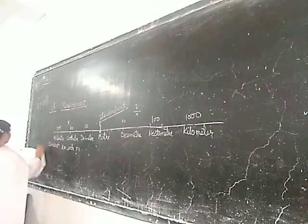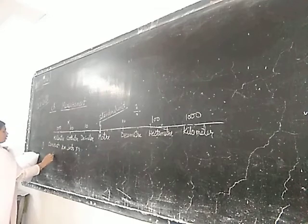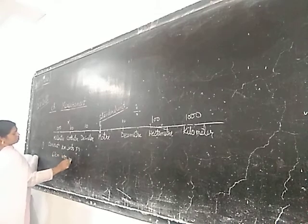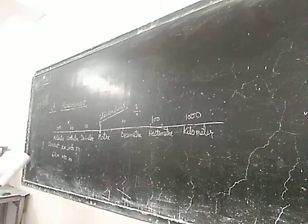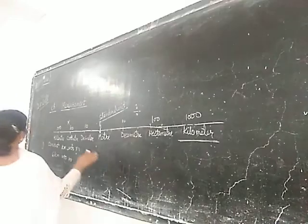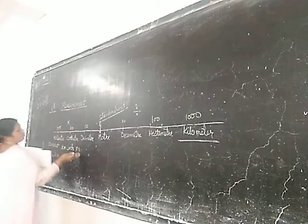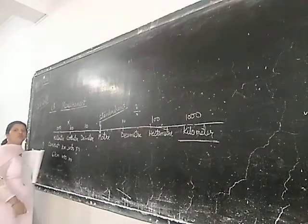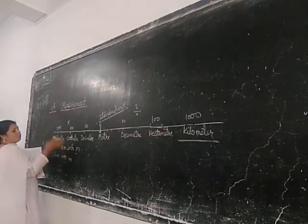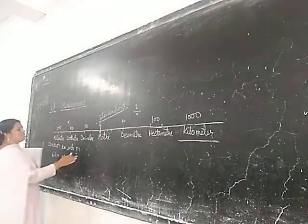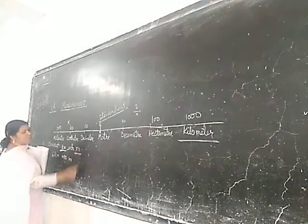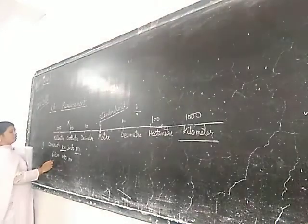Into meter. So, first thing, if you have 7, 6 kilometer into meter, so kilometer is bigger unit. When we will convert bigger unit into small unit, it means we have to multiply. When we will convert smaller unit into bigger unit, it means we have to divide it. So, kilometer is bigger and meter is smaller. So, we have to multiply by 1000.